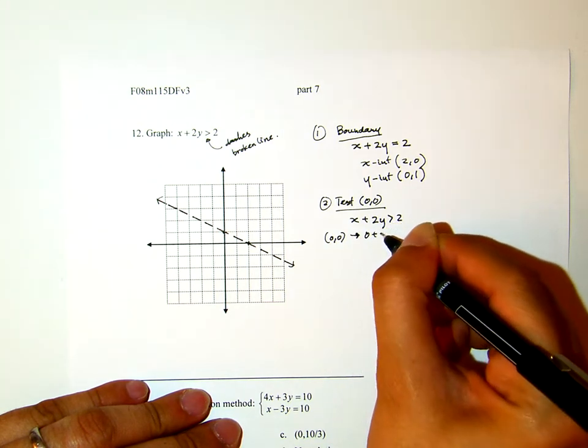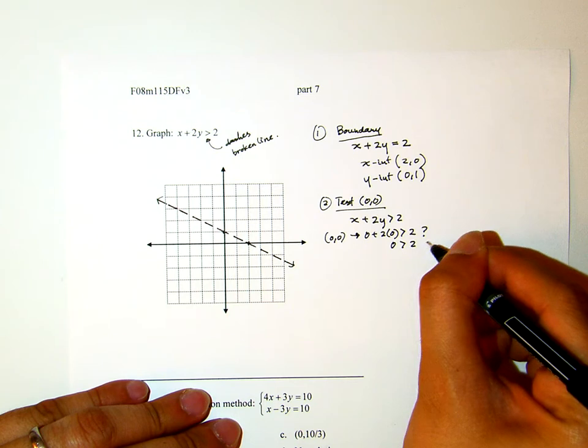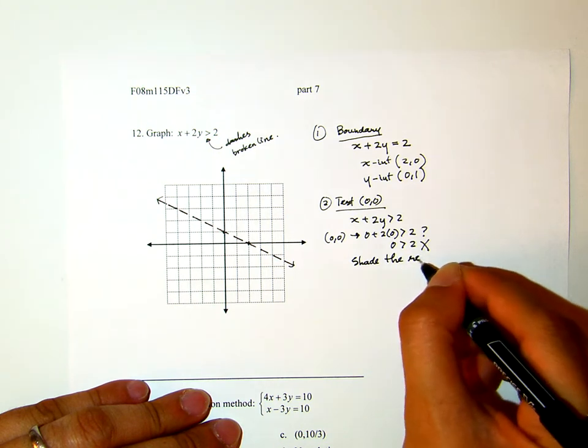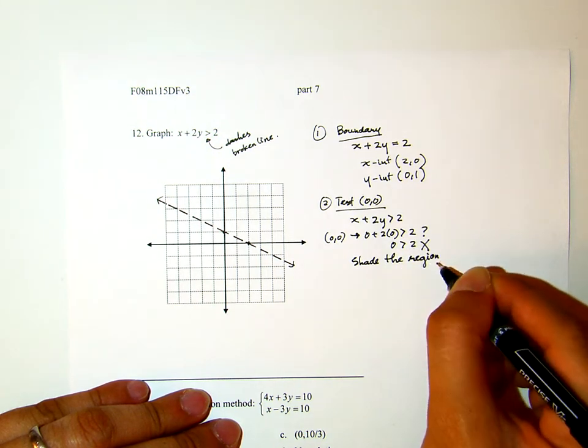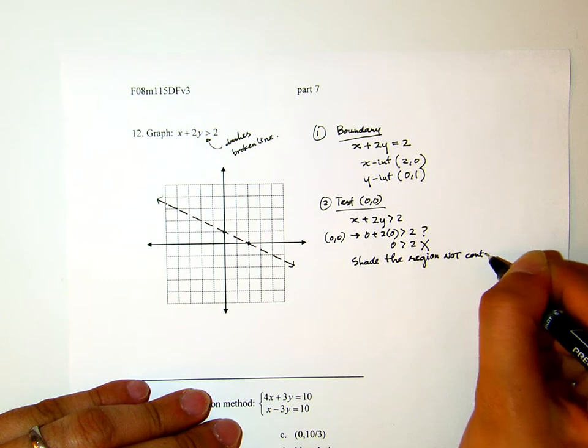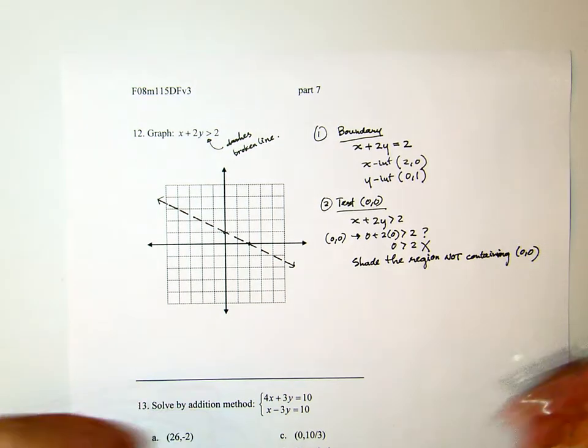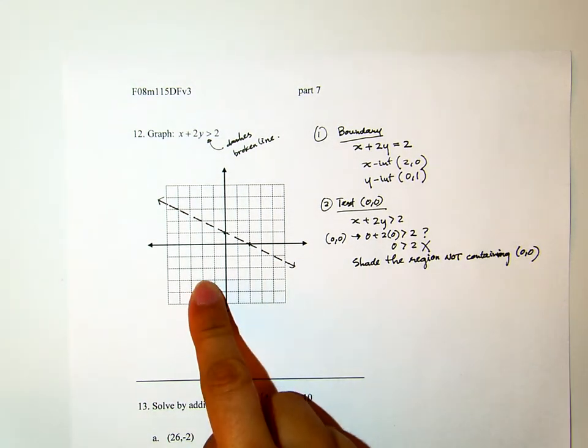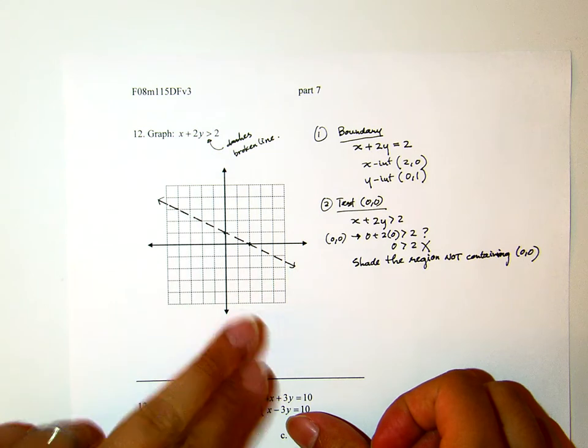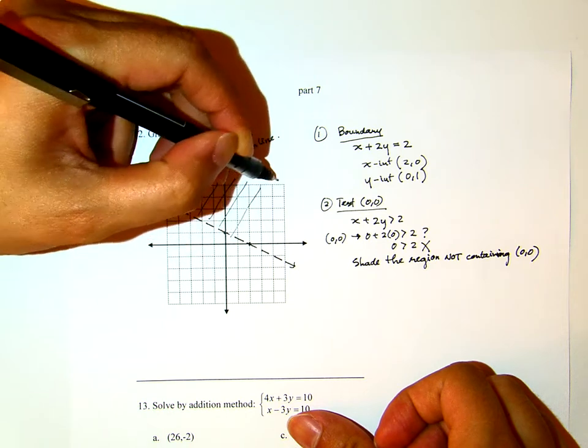It will be 0 plus 2 times 0, is it greater than 2? 0, is it greater than 2? Of course not. So we will shade the region not containing origin. Because 0,0 is not a solution to that inequality. Therefore, this region is not a solution. It's the region not containing 0,0 that is the solution.